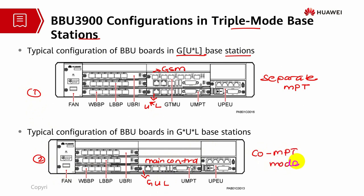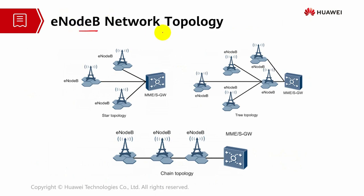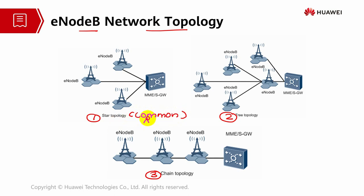We have three types of configuration mode. Next, let's go through the E-NodeB network topology, which is divided into three categories: star topology, tree topology, and chain topology. Star topology is the most common one used by most operators. Its advantage is that each E-NodeB directly connects to the MME through the transport network, facilitating engineering implementation, maintenance, and capacity expansion. Signals are transmitted through only a few nodes, giving it high network reliability. The only disadvantage is that it requires more transmission resources than other topologies.